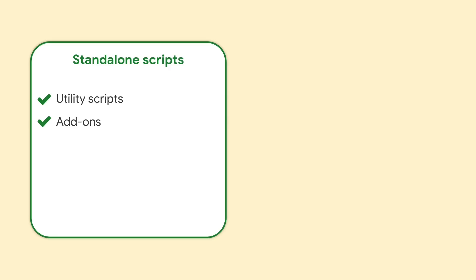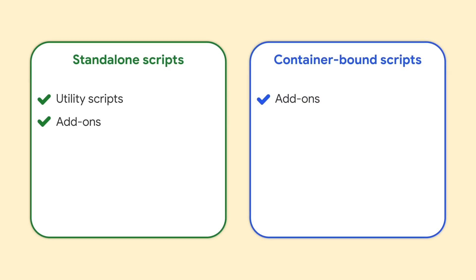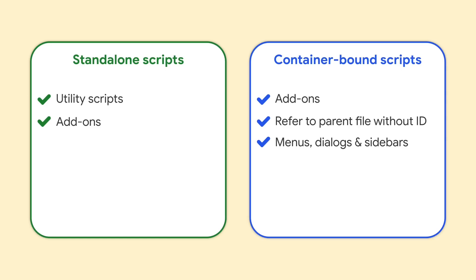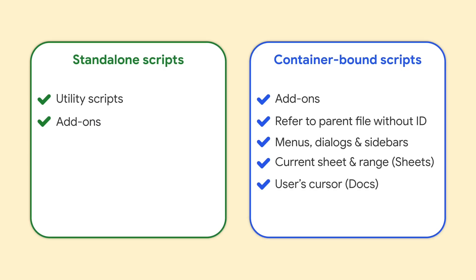By the way, you can also create add-ons with container-bound scripts, but this is less common. Container-bound scripts can refer to the file they are bound to without referring to the file's ID. This is possible through methods like getActiveSpreadsheet for Google Sheets, to name just one example. Bound scripts can be used to access the user interface of their parent file to add custom menus, dialogs, and sidebars. If you need your script to determine the user's current sheet, selected range of cells, or selected individual cells, you should create a bound script. The same is true when your script needs to determine the position of the user's cursor or select text in Google Docs. If you want to create a custom function for Google Sheets, you will have to do so in a container-bound script.